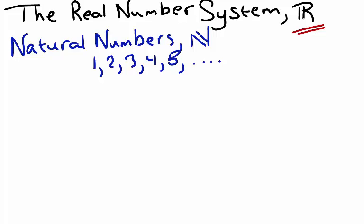The whole numbers are the same as the natural numbers, except we add zero to our set.